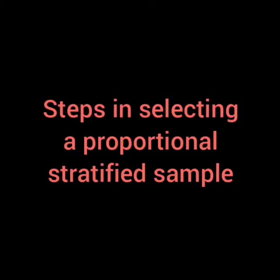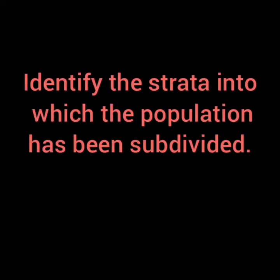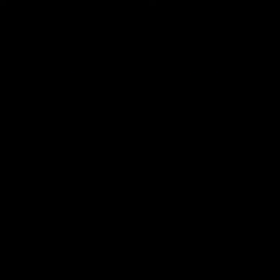Here are the steps in selecting a proportional stratified sample. First, we identify the strata into which the population has been subdivided. We already identified that, indicating the number of students per level.